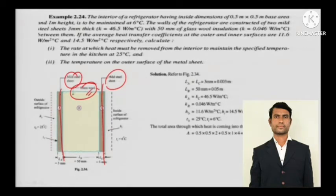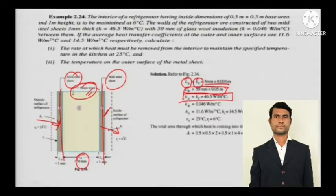This is how you can reduce the heat from here to here. Everything is given: LA equals LC, thickness is 3 mm each. LB, the thickness of glass wool insulation, has also been provided. KA equals KC - since they are both mild steel sheets, the thermal conductivity remains the same. KB, the thermal conductivity of glass wool, is also given. We have HO, the heat transfer coefficient for the outside surface of the refrigerator.